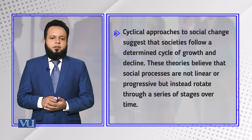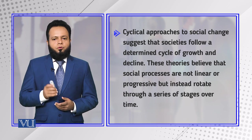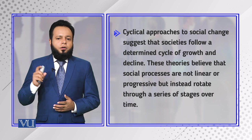In this module we are going to understand the cyclical approach to social change. Cyclical approaches suggest that societies follow a determined cycle of growth and decline. Traditionally, we were trying to understand social change through a linear model, however the linear model was insufficient to help us understand why certain events are repeated in history. These theories believe that social processes are not linear or progressive but instead rotate through a series of stages over time.